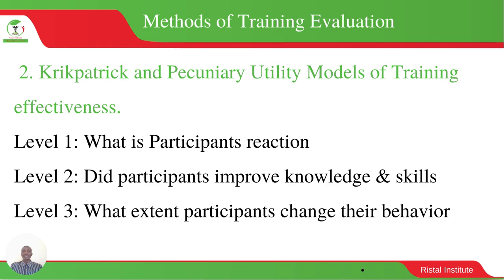The second method is the Kirkpatrick and Petroni utility models of training effectiveness. They use three levels: Level one covers participation and reaction, level two covers improved knowledge and skills, and level three examines the extent to which participants changed their behavior. These align closely with the levels already discussed in the previous evaluation method.